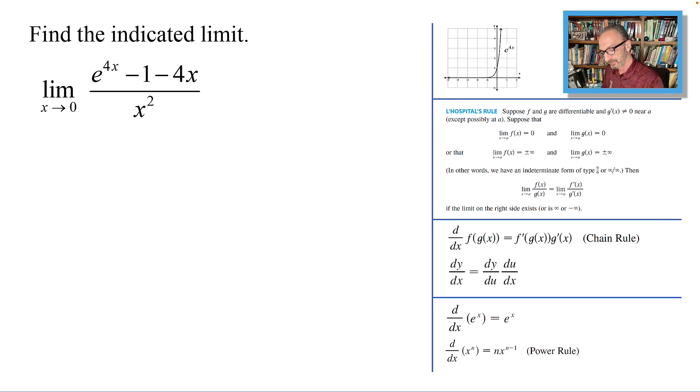We'll be using the chain rule: dy/dx equals dy/du times du/dx. The derivative of e^x is e^x, but the derivative of e^u will be e^u times u prime because we have e^u as u being 4x. Also, the power rule when we apply it to x².